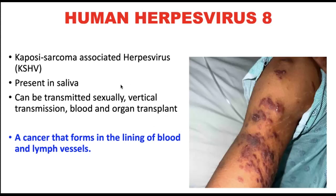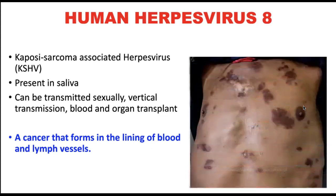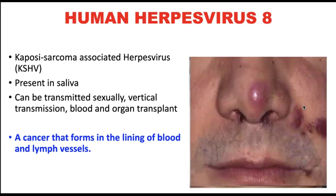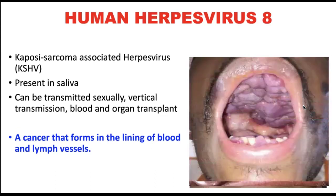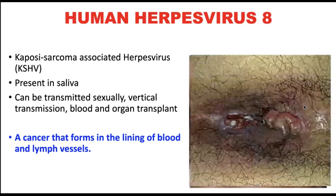Kaposi's sarcoma is a type of cancer that forms in the lining of blood and lymph vessels. The tumors usually appear on the arms, legs, feet, and face; they can also occur in the mouth, genitals, and can grow in internal organs. It is highly associated with HIV.